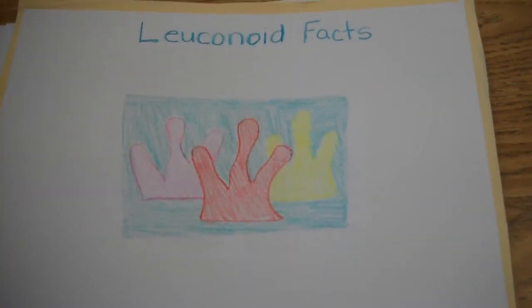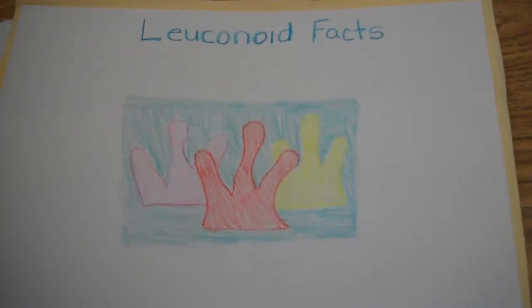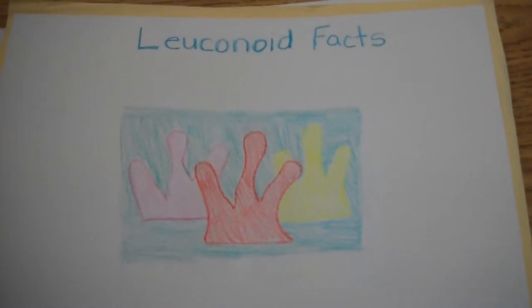One interesting fact about leuconoid sponges is that most leuconoid sponges live about 50 years, but some can live up to 200 years.